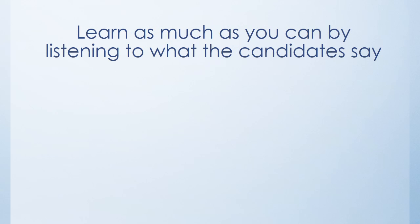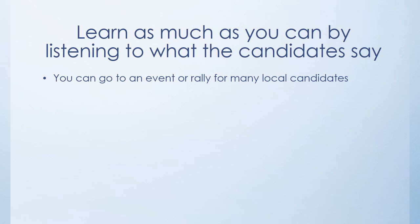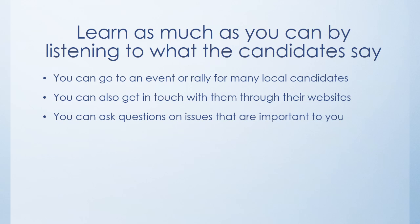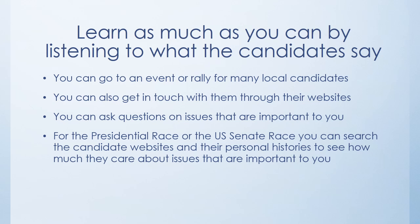You need to know that the blue book may fail to address specific issues that affect people with disabilities. Learn as much as you can by listening to what the candidates say. You can go to an event or rally for many local candidates. You can also get in touch with them through their websites. You can ask questions on issues that are important to you. For the presidential race or the U.S. Senate race, you can search the candidate websites and their personal histories to see how much they care about issues that are important to you.